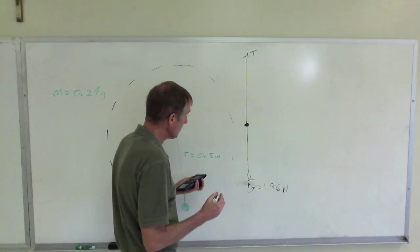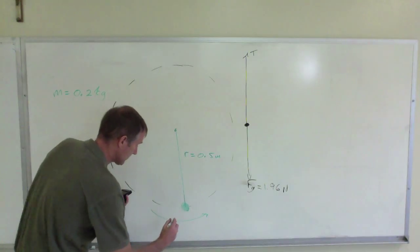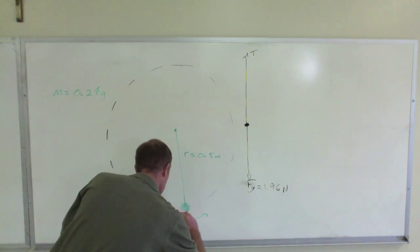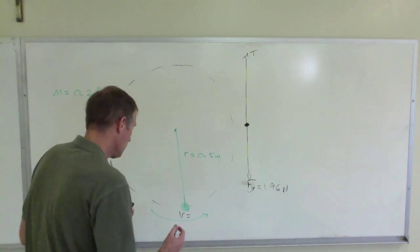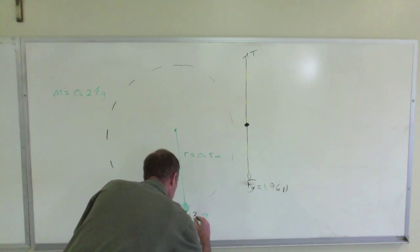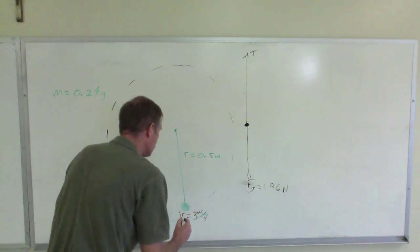Now, let's just say for the heck of it that the ball is traveling at the bottom at, I'm just totally making this up, let's say that it's traveling with the speed of 3 meters per second. That's the speed at the bottom.